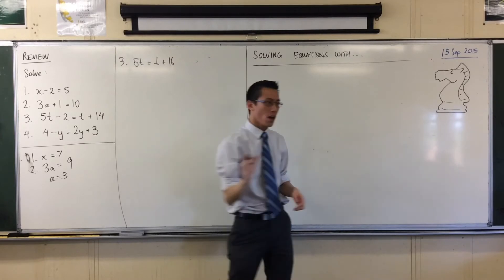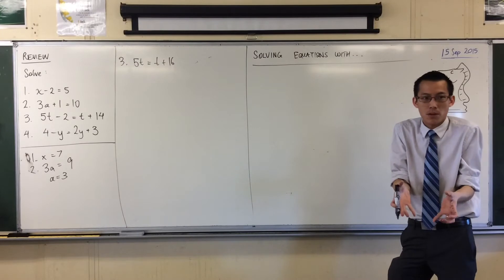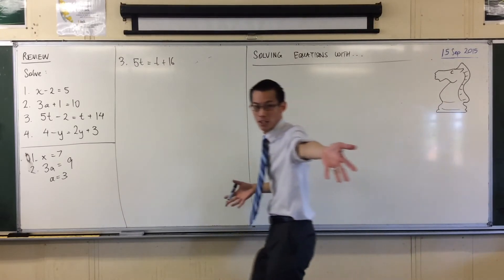Okay, now from there I have the T's in two spots, and I want them all in one spot. I want to collect like terms. So Brandon, would you give a suggestion?